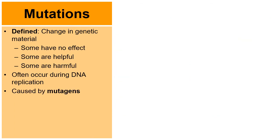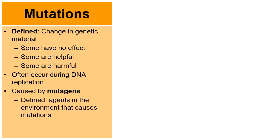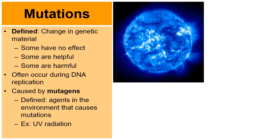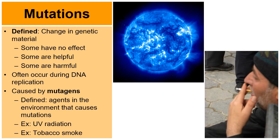Mutations tend to be caused by what we call mutagens — agents in the environment that can cause mutations. A great example is UV radiation from the Sun; overexposure can lead to mutations that can trigger skin cancer. Smoking can lead to mutations that might cause lung cancer. UV radiation and the chemicals in cigarettes are considered mutagens.